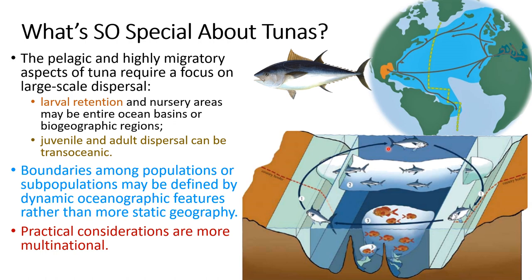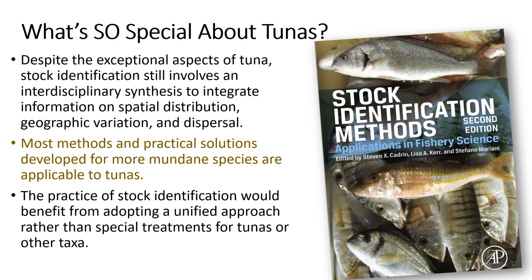Practically everything is larger, so we have highly migratory straddling stocks that are straddling EEZs, straddling the high seas, and even straddling areas of different intergovernmental organizations and agreements. So despite all these special aspects of tuna, we still need to focus on the spatial distribution, geographic variation among areas, and dispersal of fish at early and late life stages among areas. Some of the methods we've developed for other species are applicable to tunas, as are some of the practical solutions developed for stock assessment and fishery management.